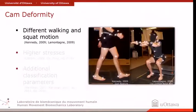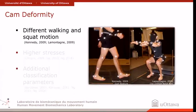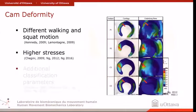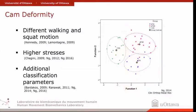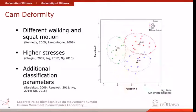We've also looked at differential walking and squat motion patterns that have been reported with cam deformity compared to controls, as well as higher stresses in the hip socket. And from the previous presentation at the symposium, we've looked at different anatomical parameters that can provide additional information to differentiate people who are symptomatic versus asymptomatic, looking at femoral neck shaft angle and pelvic motion.